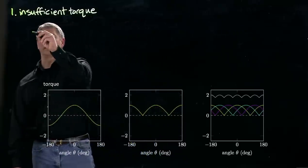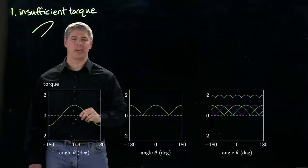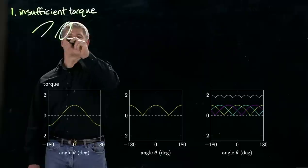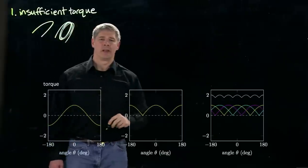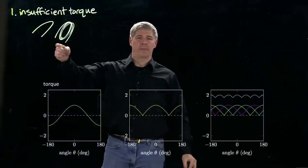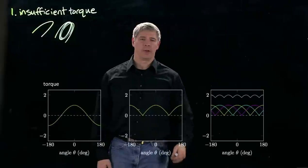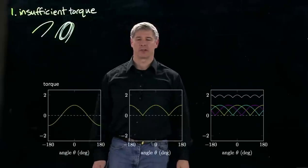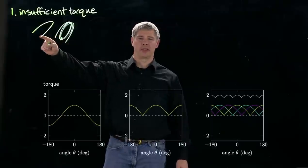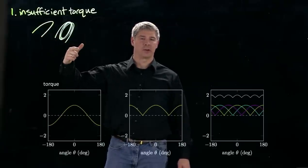Instead of just sending a single loop through the field like that, we send a coil through the field and we wrap around lots of times. Then every time the current passes through the field we get an increase in the amount of torque that's created on this coil. So we turn this single loop into a coil to increase the torque.